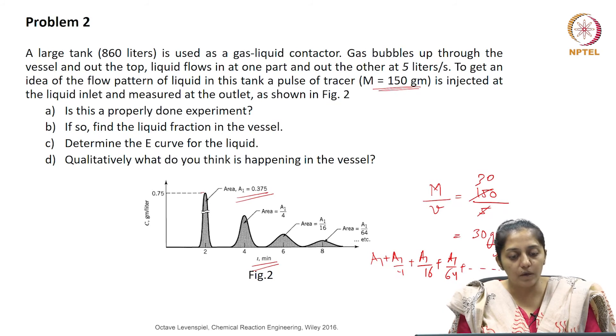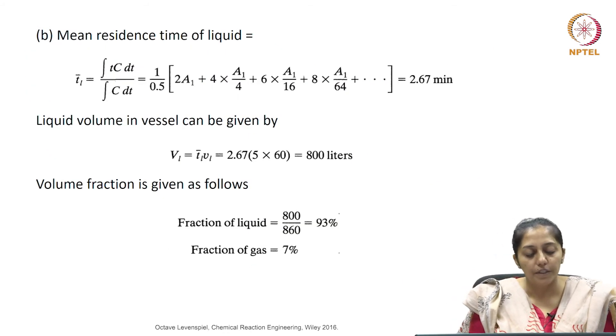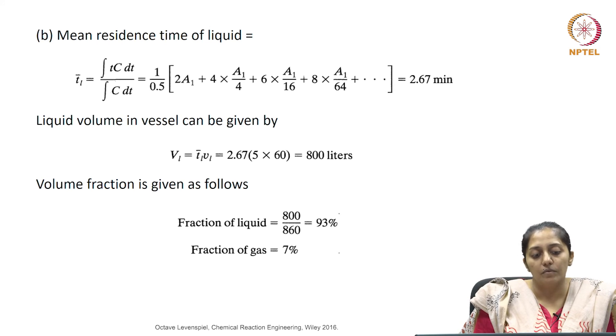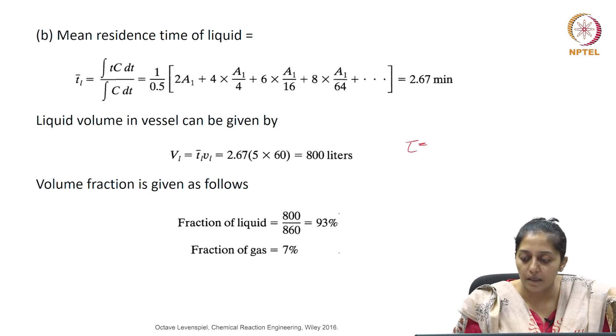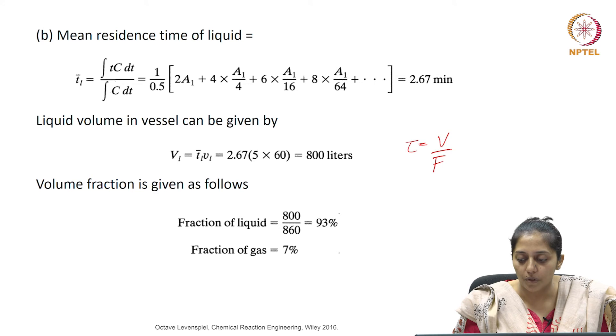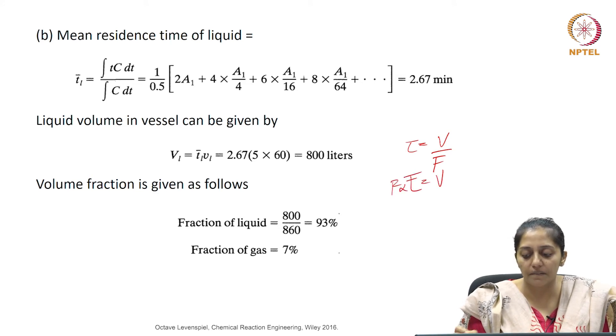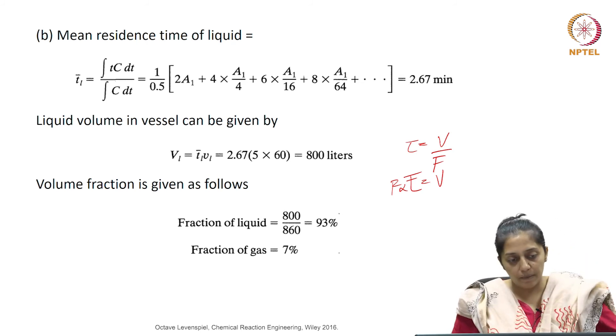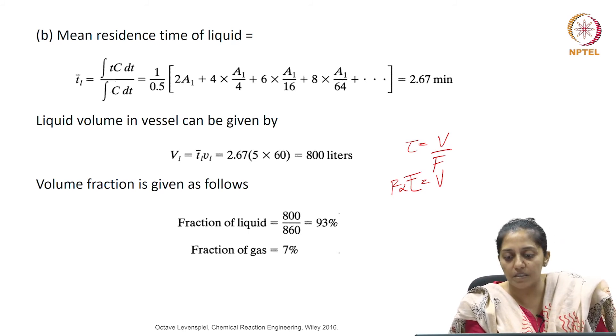Now we need to find out the liquid fraction in the vessel. For that, we need to first find how much is the volume of the liquid in the vessel. In order to find the volume of the liquid in the vessel, we know the volumetric flow rate. Mean residence time is V by F. So your volume can be given if the volumetric flow rate is multiplied by the mean residence time. Mean residence time knowing the C curve can be calculated using discrete time intervals.